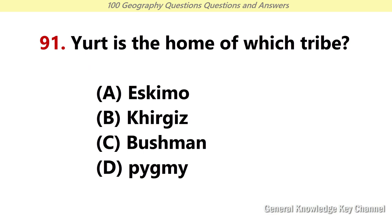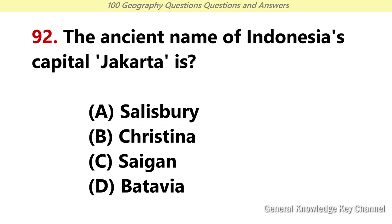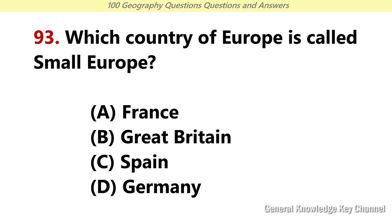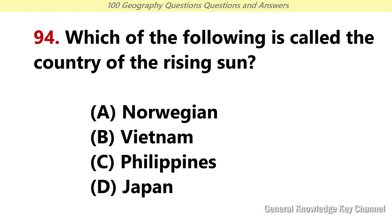Yurt is the hometown of which tribe? Answer B: Khirgiz. The ancient name of Indonesia's capital Jakarta is? Answer D: Batavia. Which country of Europe is called small Europe? Answer A: France. Which of the following is called the country of the rising sun? Answer D: Japan.